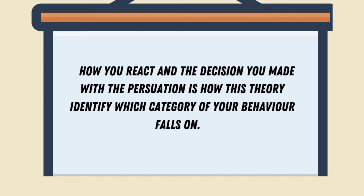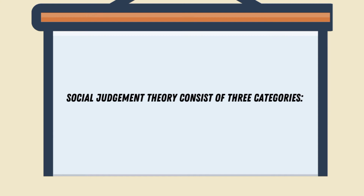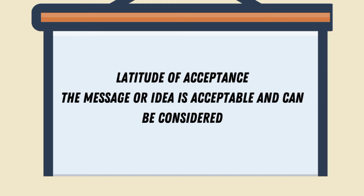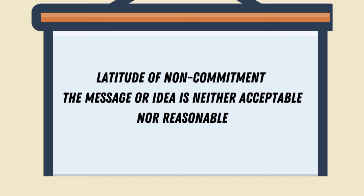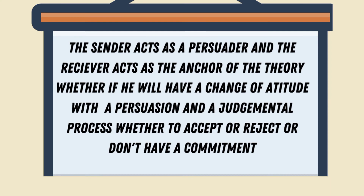Social Judgment Theory consists of three categories: Latitude of acceptance — the message or idea is acceptable and can be considered. Latitude of rejection — the message or idea is unacceptable and perceived as unreasonable. Latitude of non-commitment — the message or idea is neither acceptable nor unreasonable. The sender acts as a persuader and the receiver acts as the anchor of the theory, determining whether there will be a change of attitude and a judgmental process whether to accept, reject, or have no commitment.